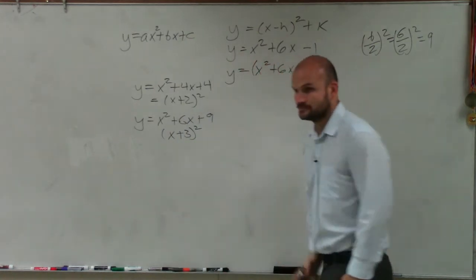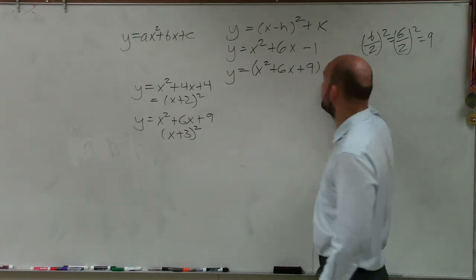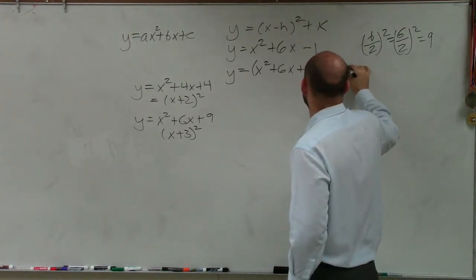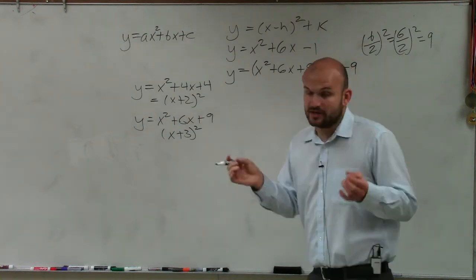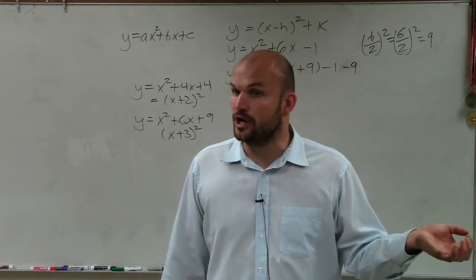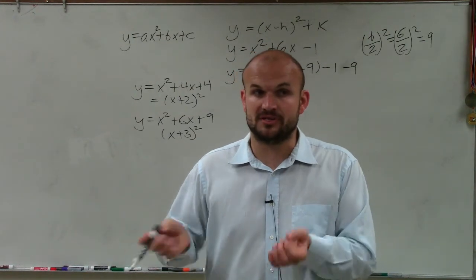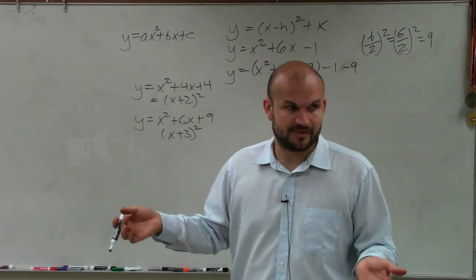Yes? I haven't added a 9 yet. The negative 1's there, and then I have to subtract the 9. Because remember, if you're going to add something on one side of the equation, you have to add it to the other side of the equation. Or you can add it on one side of the equation, and then also subtract it, which is that's fine, right? You guys need me to go over that?